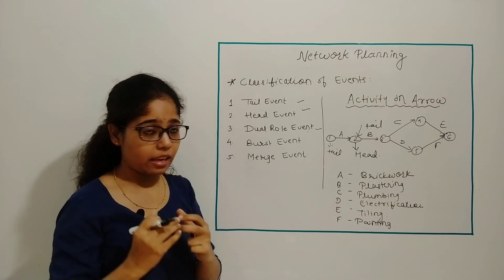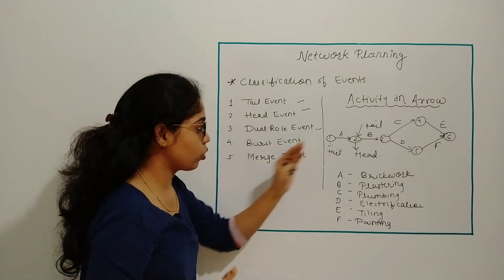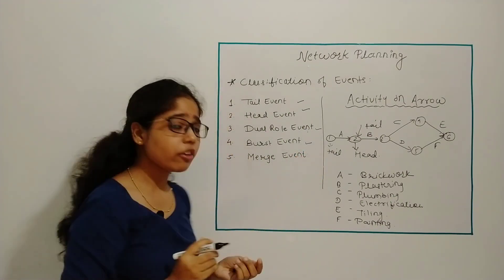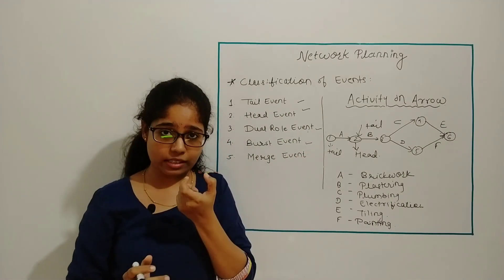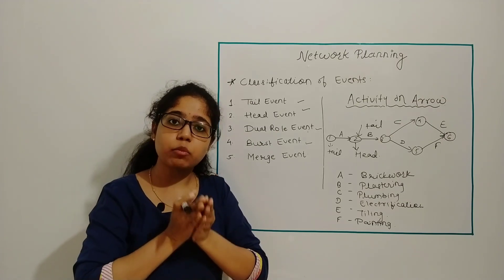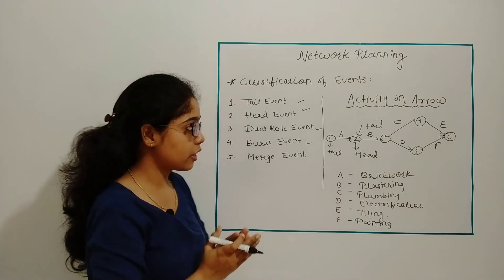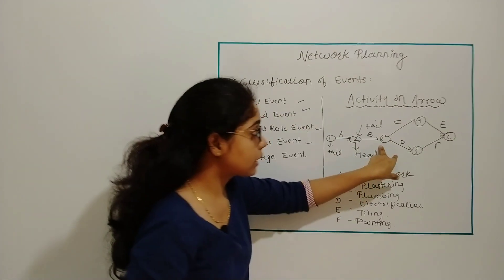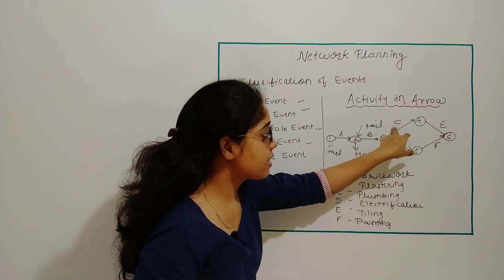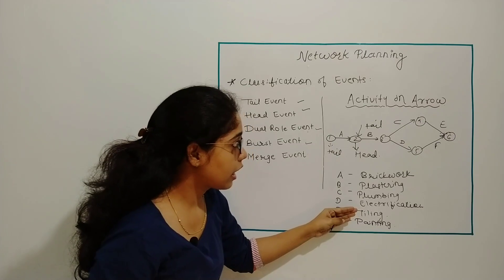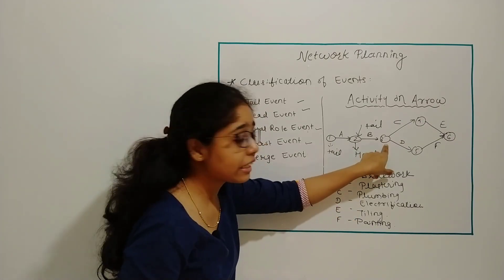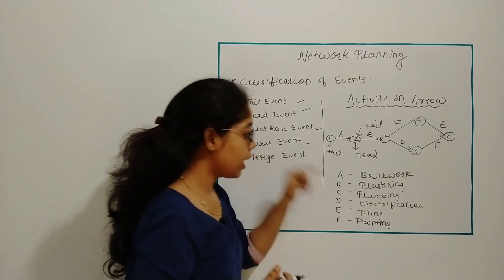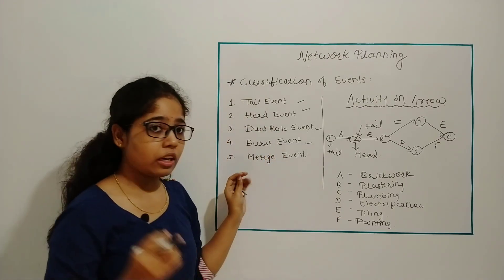Fourth is your burst event. If from a single node or single point I am starting more than one activities, then it is called burst event. Like here you can see from node 3 I am starting activity C and D, that is plumbing and electrification work. So that node 3 is called your burst event.